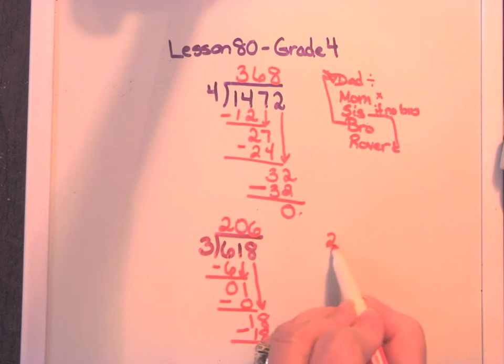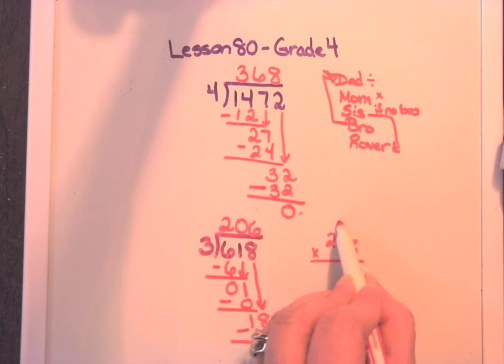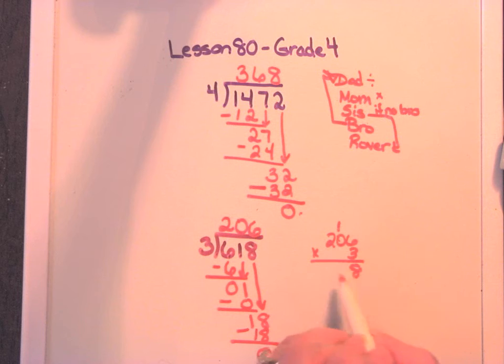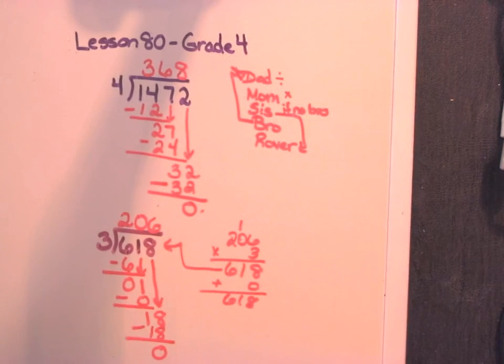We can check our answer. 206 times 3. 3 times 6 is 18. Carry my 1. 3 times 0 is 0. Plus 1 more is 1. 3 times 2 is 6 is 18. It should match what's in there. And if I had a remainder, I add that remainder onto the bottom there. Add in the remainders and you have your answer. So that's what it looks like to have a problem with the 0 in the answer.